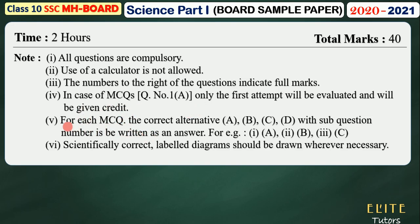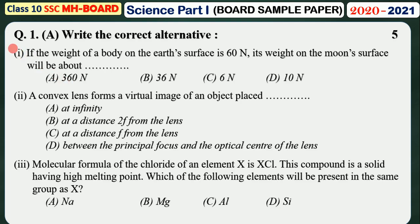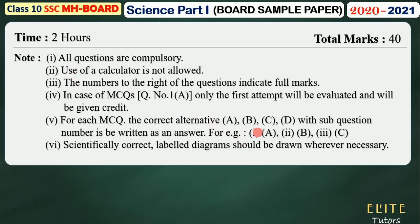For MCQs, for each question you have to write the correct alternative — A, B, C, or D — along with the sub-question number as your answer. For example, if the answer is A, you have to write the complete statement: the question number, sub-question number, and the option. So you have to write the complete statement. Remember this format.